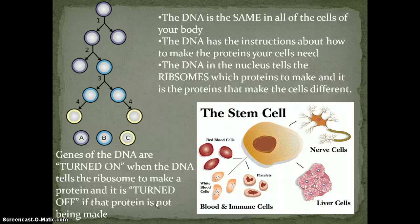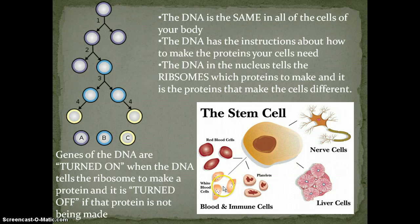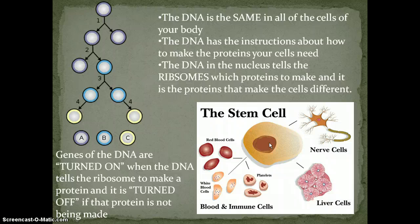Those are specialized cells — red blood cells are specialized. Specialized cells have special jobs, they do certain things, and it's all determined by which proteins the DNA tells the ribosomes to make. That concludes this podcast. See you next time.